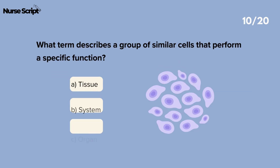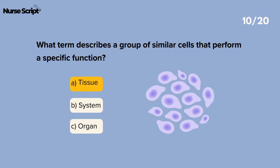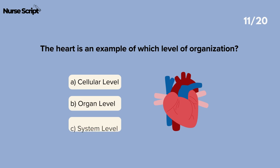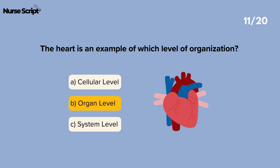What term describes a group of similar cells that perform a specific function? Tissue. The heart is an example of which level of organization? Organ level.